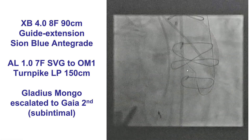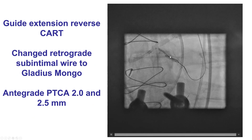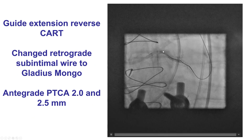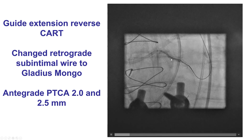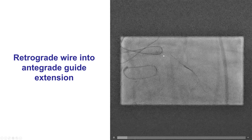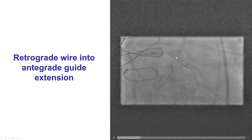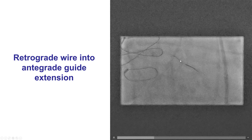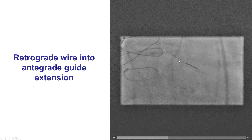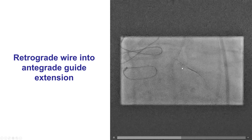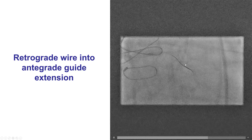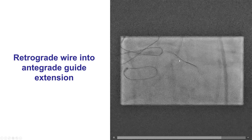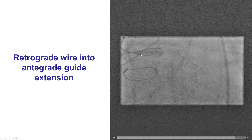The next step was to do the guide extension reverse CART. We advanced an antegrade guide extension and an antegrade balloon, and tried to advance the retrograde wire into the antegrade guide extension. This was challenging, but we were able to advance the guide extension into the middle segment of the circumflex, and then, after some attempts, we were able to advance the retrograde guidewire into the antegrade guide extension, as can be seen here. The guide extension can really facilitate a reverse CART.